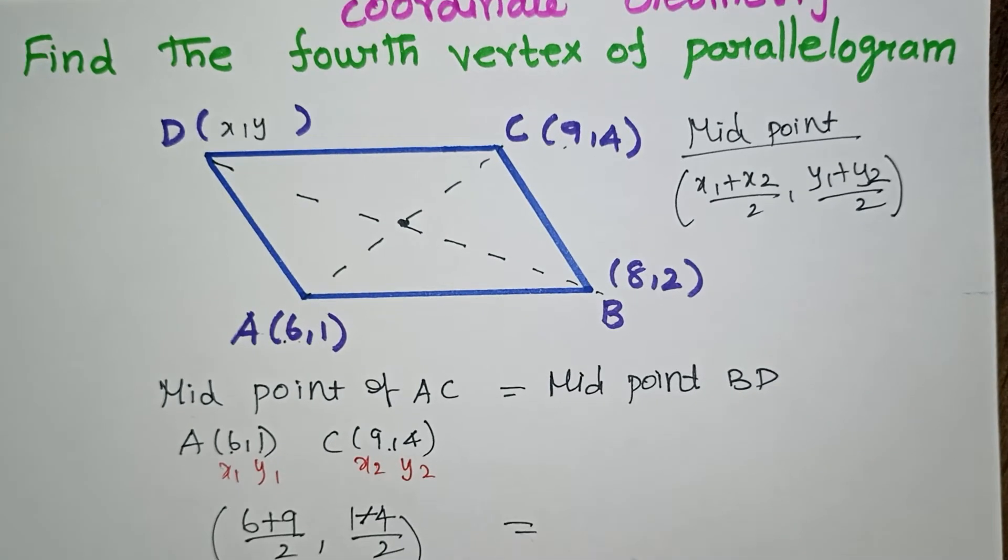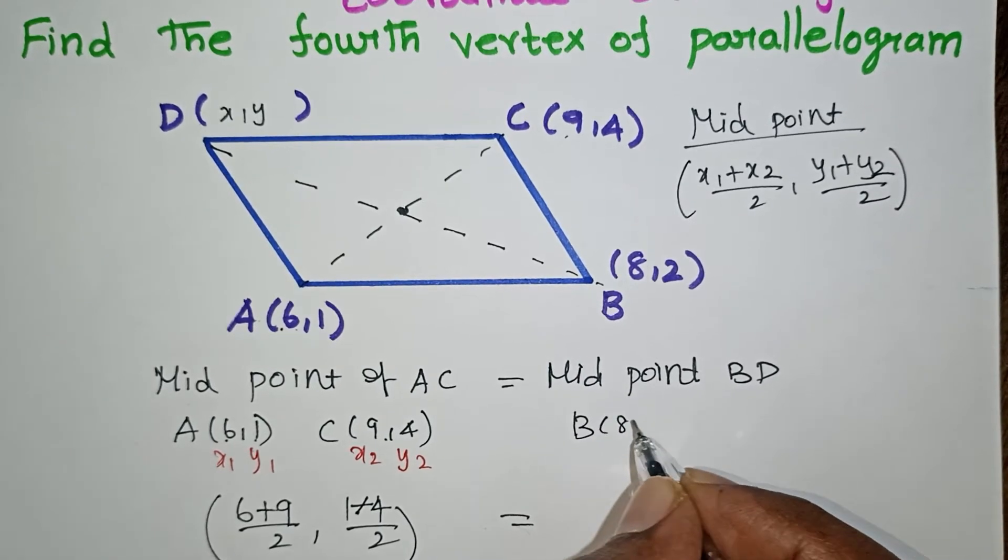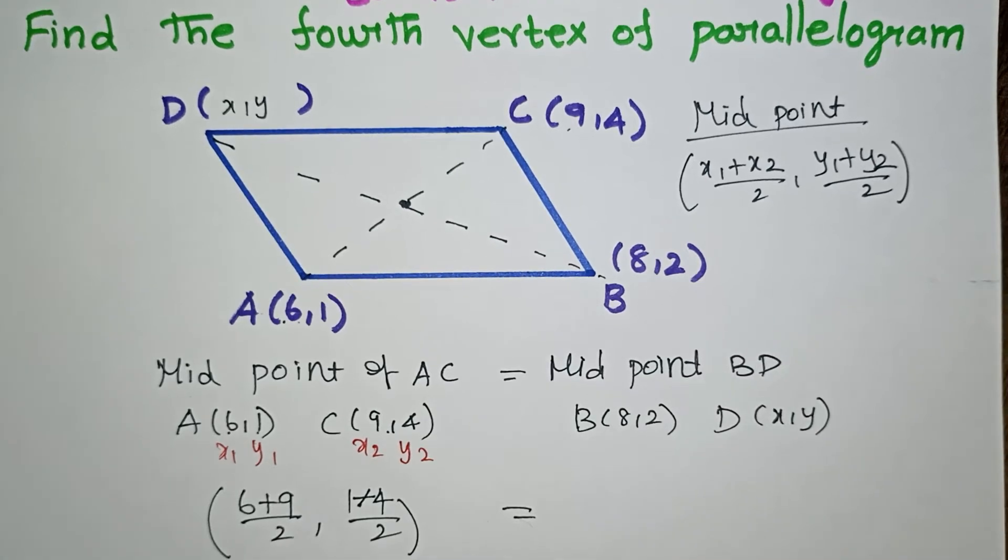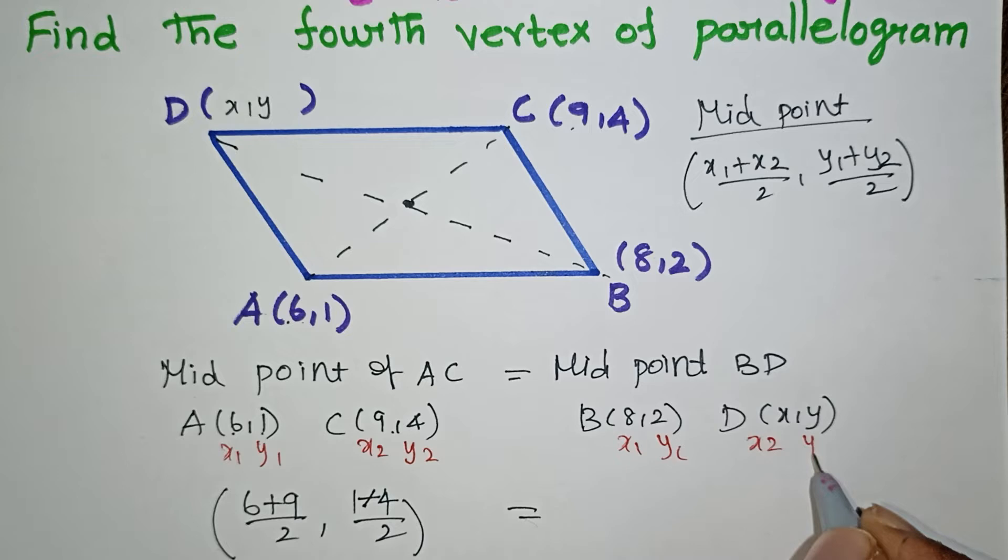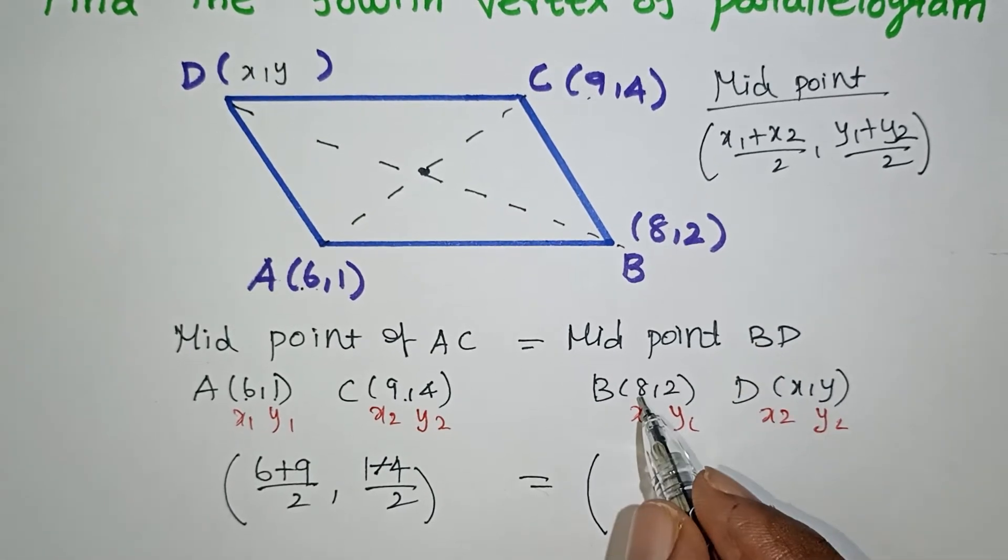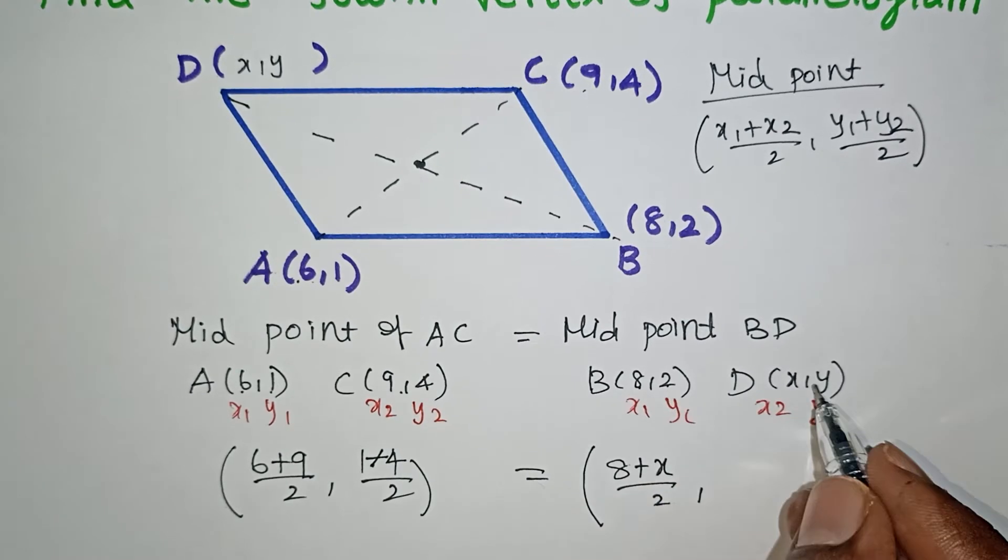Same way for B and D: B is at 8 comma 2 and D we have considered as X comma Y. Applying the formula, the midpoint is 8 plus X by 2 comma 2 plus Y by 2.